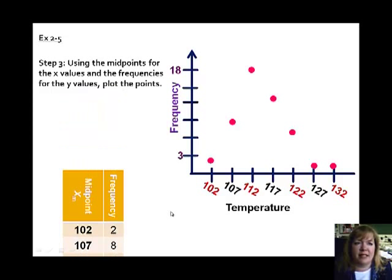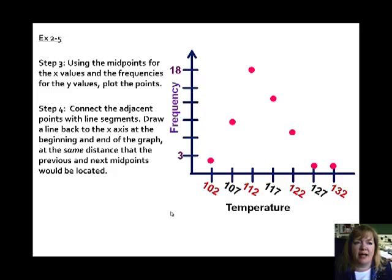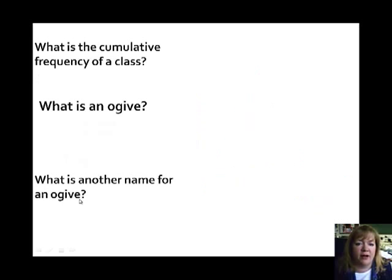So then the last step, what you're going to do, is just connect the adjacent points with line segments. Draw a line back to the x-axis at the beginning and at the end of the graph, the same distance that the previous and next midpoints would be located. So we're just going to connect those data points with straight lines. Easy peasy. Lemon squeezy. So they want you also to complete the graph by extending it to the x-axis. So I draw a line down to the x-axis at the end and down to the x-axis at the beginning. Easy. That's all there is to it. Just has some fancy names.